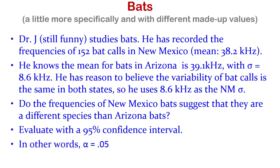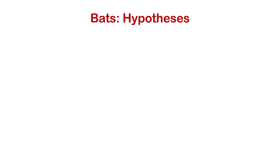One thing to note: when we say a 95% confidence interval, that's the same thing as saying a non-directional or two-tailed test with alpha of 0.05. If alpha is 0.05, then we want a two-tailed test with a confidence level of 0.95. A 95% confidence interval is what we're going to test this with.